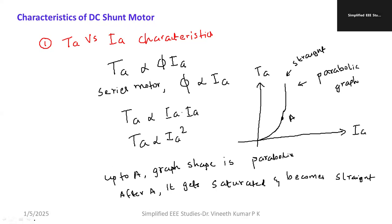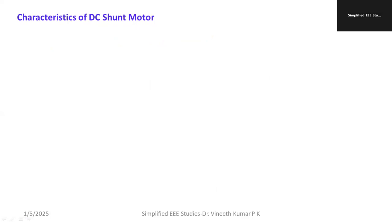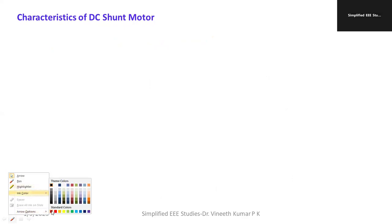This type of characteristic is known as TA versus IA, that is torque versus armature current characteristics. Now moving on to the next characteristics: N versus IA characteristics.